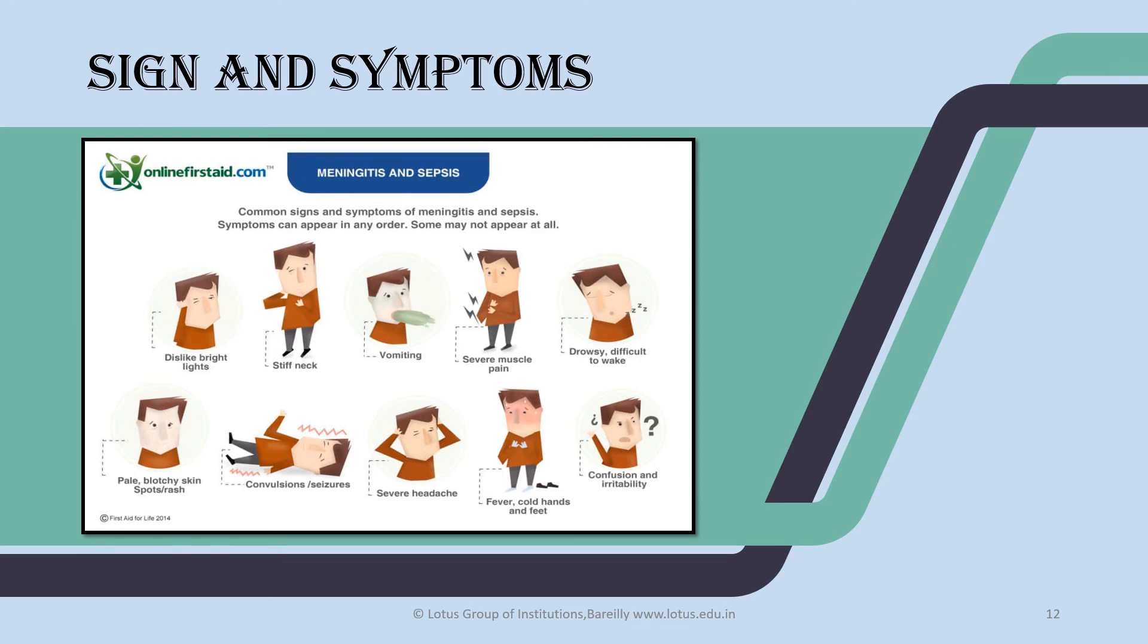Signs and symptoms: when meningitis and encephalitis combine, we call it meningoencephalitis. Meningitis is inflammation of leptomeninges with brain inflammation. Signs and symptoms include headaches, fever, stiffness in the neck, photophobia which is discomfort with bright light, phonophobia which is discomfort with loud sounds. If encephalitis occurs, we see altered mental state, confusion, irritability, seizures. These are our signs and symptoms.